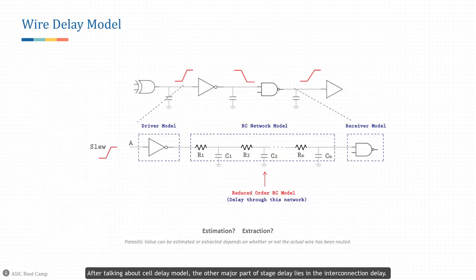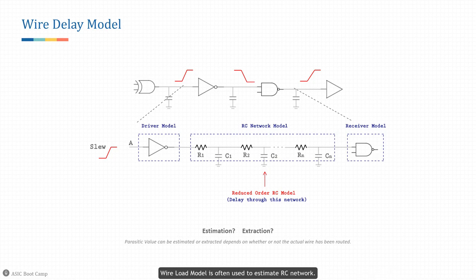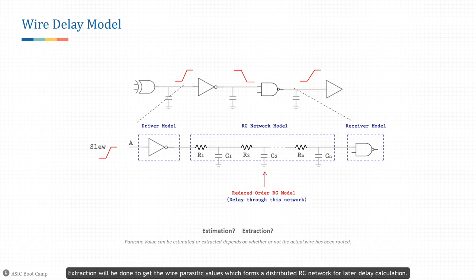Wire delay model: after talking about cell delay model, the other major part of stage delay lies in the interconnection delay. The main parasitics for today's interconnections are resistors and capacitors, so the interconnection parasitic can be represented by an RC network. The values for the parasitic can be pre-layout estimation or post-layout extraction. In pre-layout phase, estimation of interconnection delay happens before the design has been actually routed — the implementation tool estimates wire delay for logic optimization and placement. In post-layout phase, after the design is fully routed, we know the exact topology and length of the route; extraction is done to get wire parasitic values which form a distributed RC network for delay calculation.